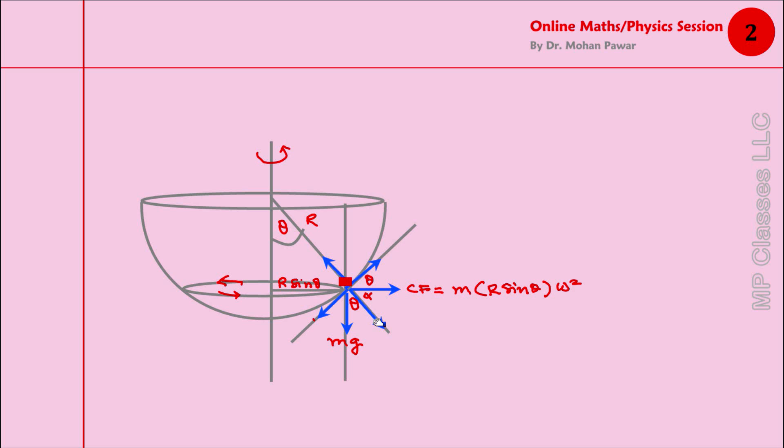Let us see what mg in the radially outward direction is going to be: mg cos θ. If that is mg cos θ, then we immediately know that this is mg sin θ.